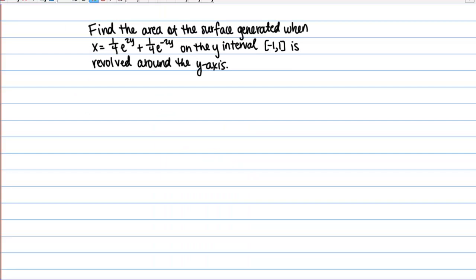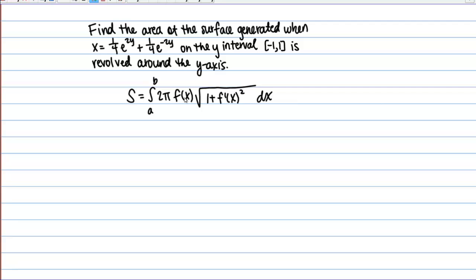How are we going to go about computing this area? We've seen a formula for surface area for surface of revolution. That formula is the integral from A to B of 2π · F(x) · √(1 + [F'(x)]²) dx. This was for some function F(x) that was positive and differentiable, revolved around the X axis, giving the area of the surface generated.